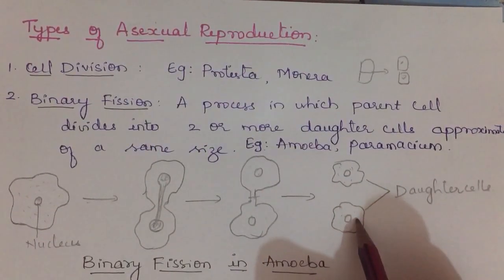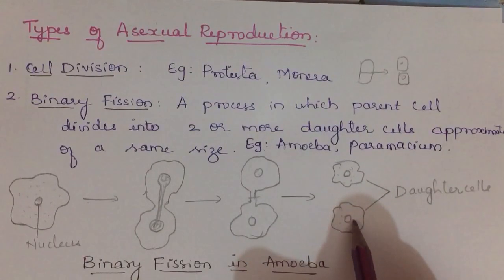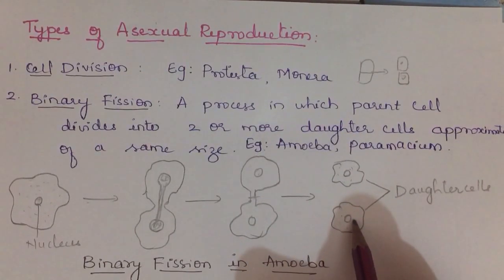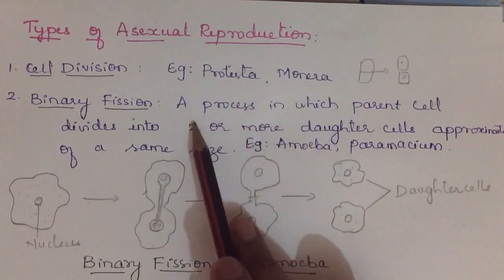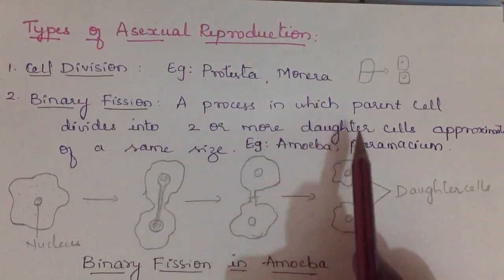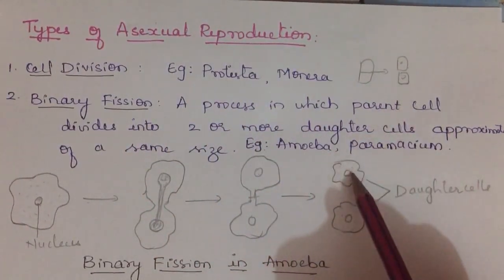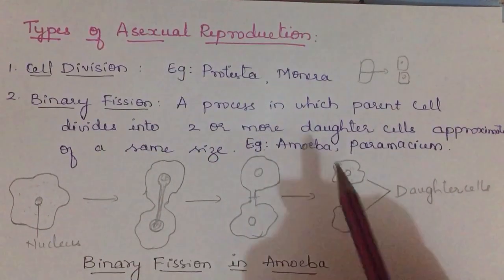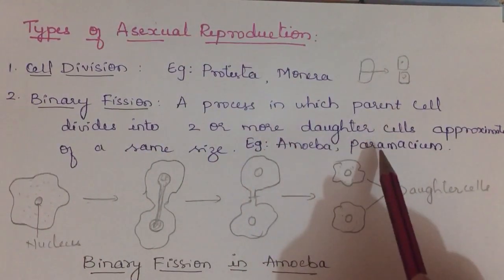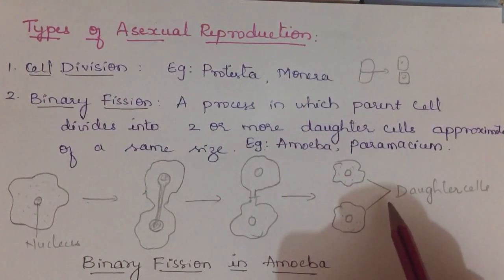After karyokinesis, cytokinesis occurs — the cytoplasm divides — resulting in the formation of two daughter cells. So in binary fission, the parental cell divides into two or more daughter cells of approximately the same size. Examples: amoeba and paramecium.